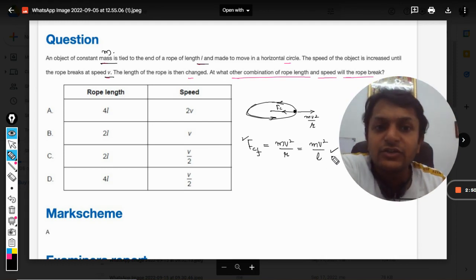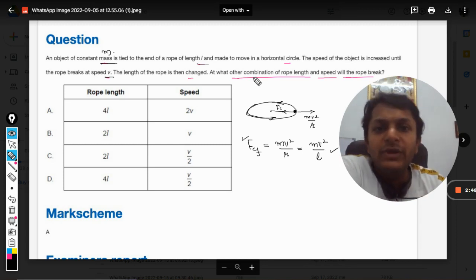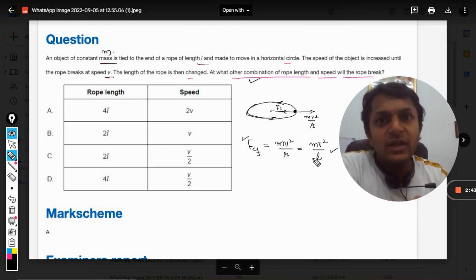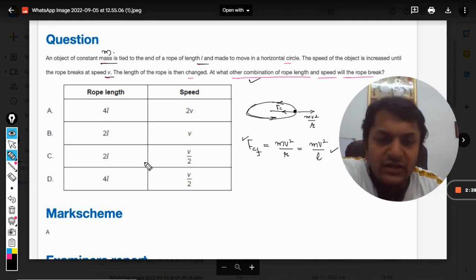Now in what other combination will the breaking strength be breached? We have to find that. So we have to see the combination here and find where the centrifugal force equals this value, and wherever it does, the rope will break.